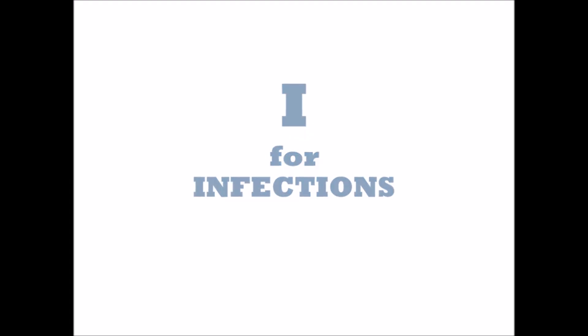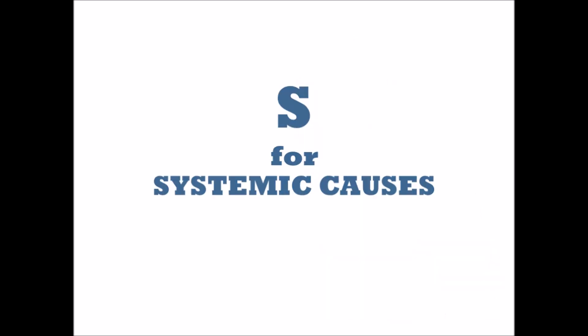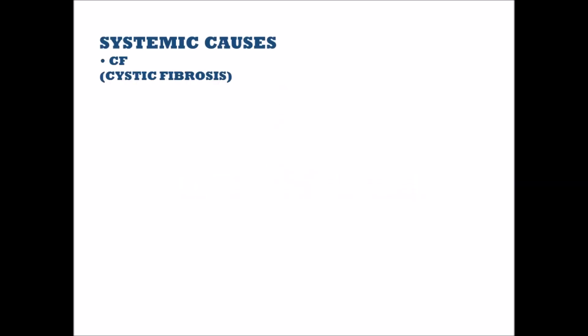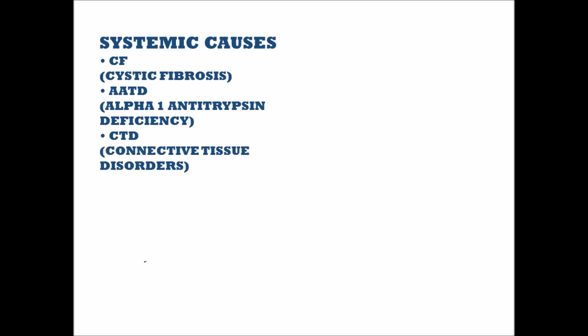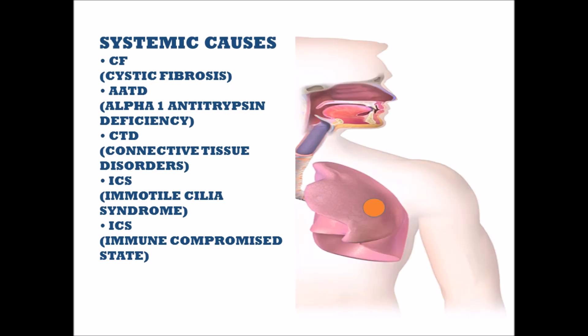I is for infections. When infection is the cause of bronchiectasis, the findings are often confined to the segment of the lung that was infected, resulting in focal bronchiectasis. S is for systemic causes. When systemic causes like cystic fibrosis, alpha-1 antitrypsin deficiency, connective tissue disorders, immotile cilia syndrome, or immune-compromised states result in bronchiectasis, they often cause diffuse bronchiectasis.